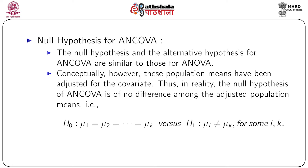The null and alternative hypothesis for ANCOVA are similar to those of ANOVA. Conceptually, however, the population means have been adjusted for the covariate. In ANOVA, the null hypothesis is μ1 = μ2 = ... = μR. In ANCOVA we test the same, but adjusted for the effect of the covariate on the responses. The alternative hypothesis is that μi ≠ μk for some i, k — at least one pair is significantly different.